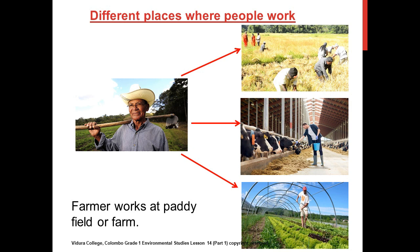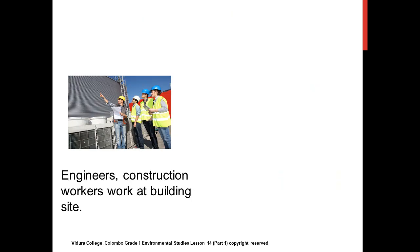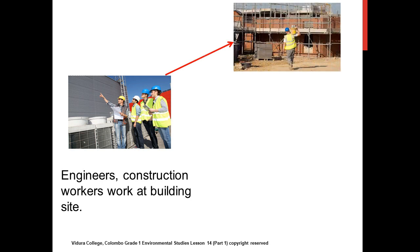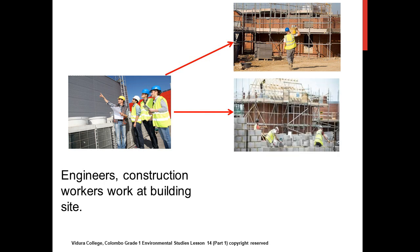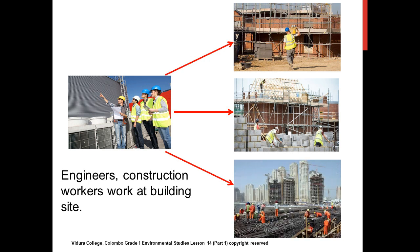We'll go through some more examples now. Take a look at this picture — who works in a building site? Engineers, construction workers, architects, and helpers work at a building site — that is their working place. Sometimes engineers and architects can also work in an office, but their duty and responsibility is to attend at the building site and check whether the work is going well.